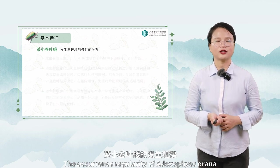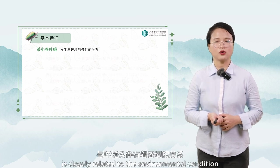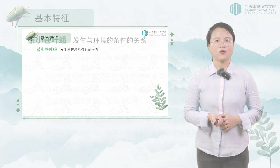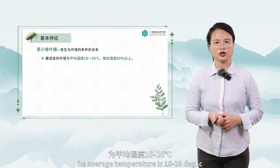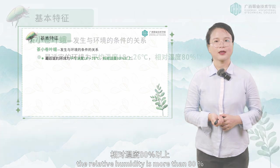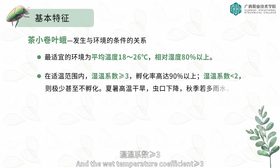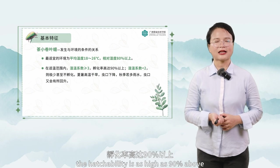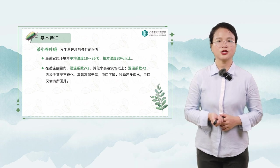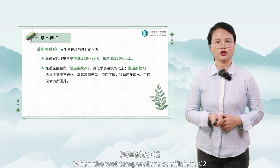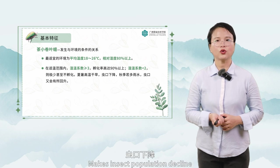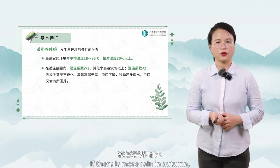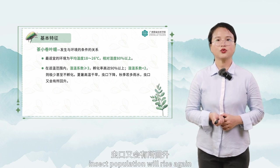The occurrence regularity of Adoxiphes orana is closely related to environmental conditions. The most suitable environment has an average temperature of 18 to 26 degrees Celsius and a relative humidity of more than 80 percent. When the wet temperature coefficient is greater than or equal to three, hatchability is as high as 90 percent or above. When the wet temperature coefficient is less than two, there is very little or no incubation in summer. Heat and drought cause insect population decline. If there is more rain in autumn, insect populations will rise again.